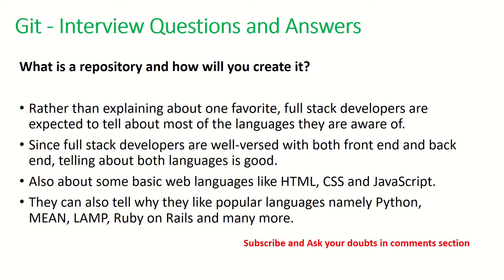The next question is: what is a repository and how will you create it? This is an interesting question because the interviewer wants to see how you tackle it. You can say that you have created a repo — for example, a back-end repo — and describe what projects you have worked on. A Git repository is where the starting or skeleton project is kept, to which all developers will commit their code.